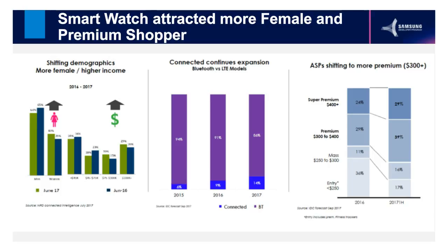That means you can create a watch face or application that can run in standalone mode, with no dependency on the mobile phone at all. We also see that ASPs have been shifting to more premium devices starting from $300 or more. So people are ready to buy a smartwatch even for $300 or more — that is the information we got through surveys.